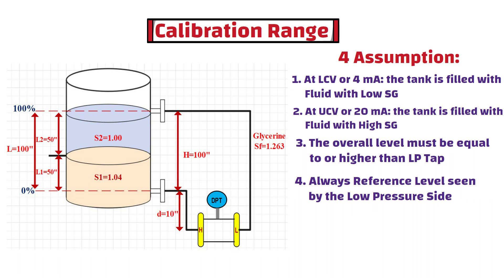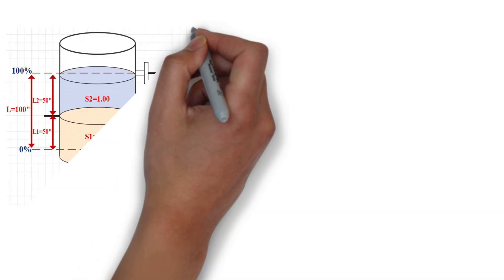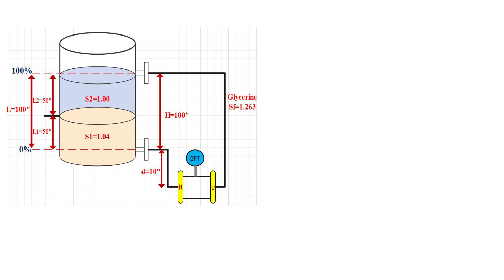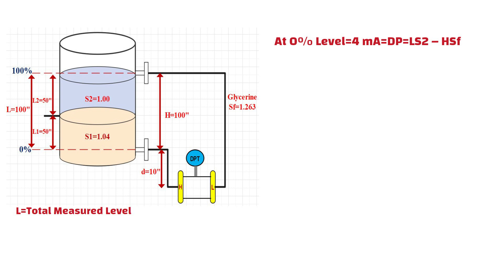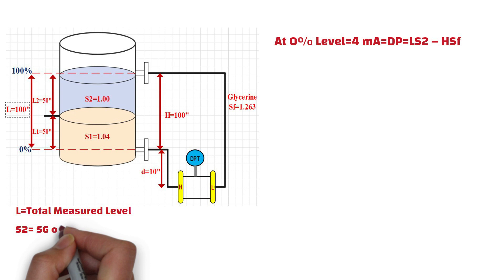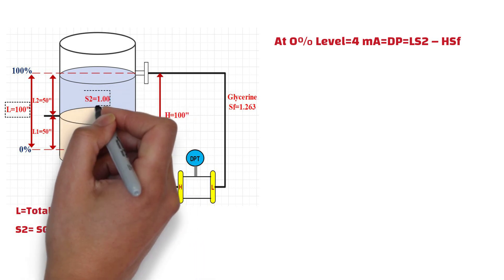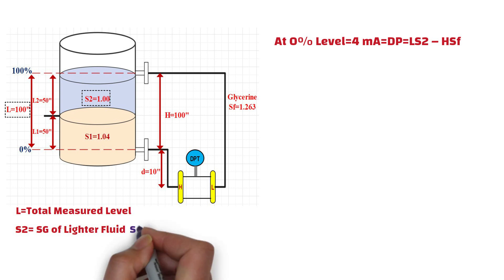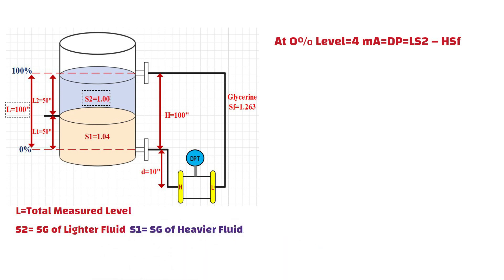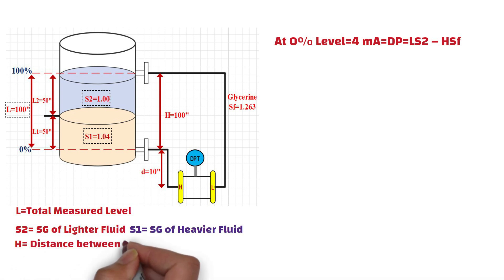Now let's go to the calculation steps. When the tank is filled with lighter fluid, the transmitter is at 4 mA, and this is the standard equation to calculate the lower range value of this transmitter. In this equation, L is the total measured level, which is 100 inches in this example. S2 is the specific gravity of the lighter fluid in the tank, which is 1 in this example. S1 is the specific gravity of the heavier fluid in the tank, which is 1.04 in this example. H is the distance between taps, which is 100 inches.